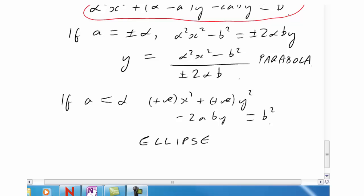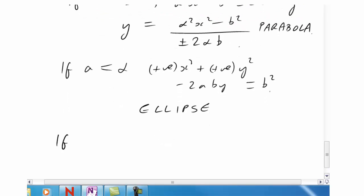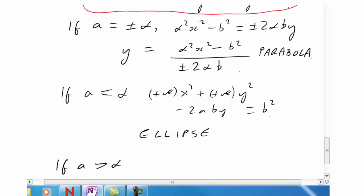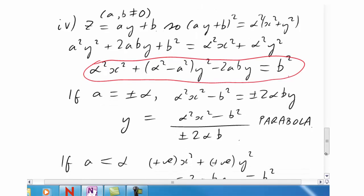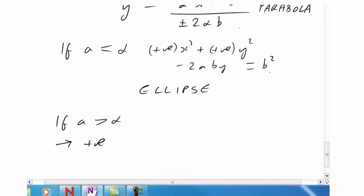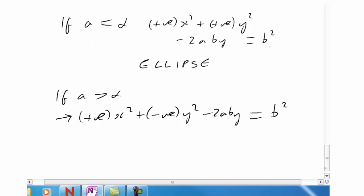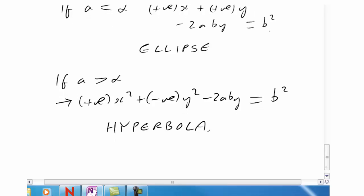Just the hyperbola to go now. That must be the one missing case. If a is bigger than alpha, now going back to our red equation there, now the alpha squared minus a squared is negative, so we've got positive lot of x squared, but a negative lot of y squared. And still the minus 2ab y term and b squared on the other side. And sure enough, with plus x squared and minus y squared type terms, again the 2ab y term doesn't interfere, it just shifts the center, so we should recognize that as the equation of a hyperbola. So we've now recovered all the equations of the conic sections, and my task is finished.